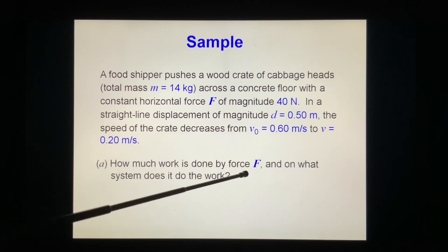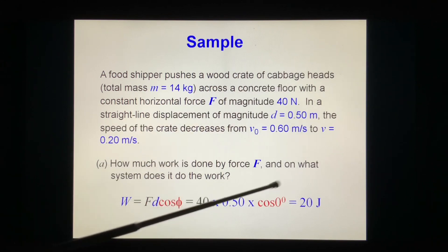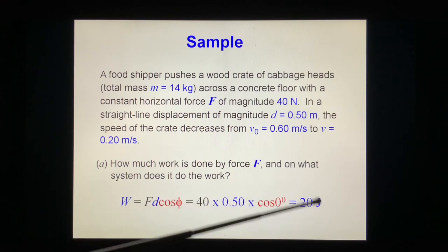The work done by the force is easy. By definition, F·d = Fd cos φ. In this case, F is 40 N, d is 0.50 m, and the angle is zero. So we put this number inside, we get 20 J.